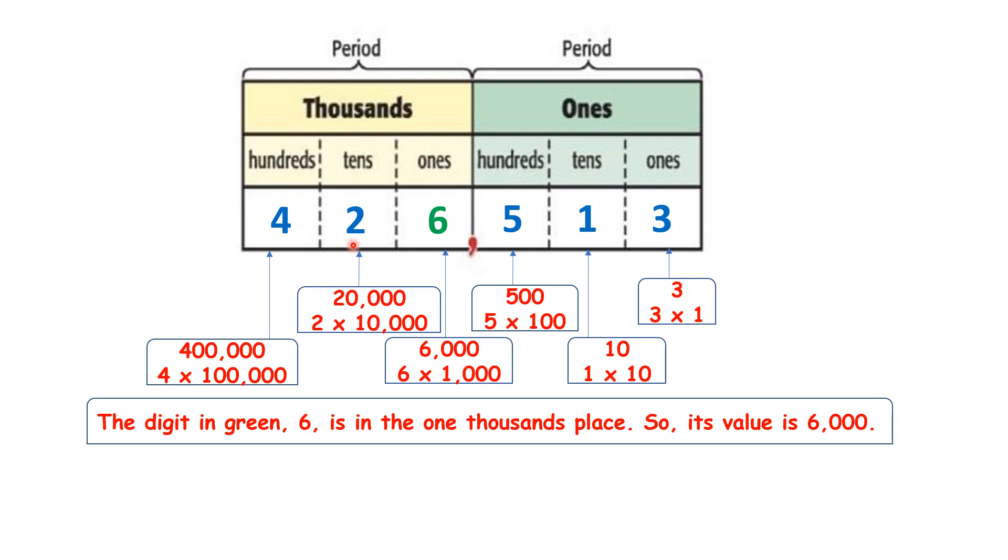The 2 is in the tens thousands place, so its value is 20,000. And the 4 is in the hundreds thousands place, so its value is 400,000.